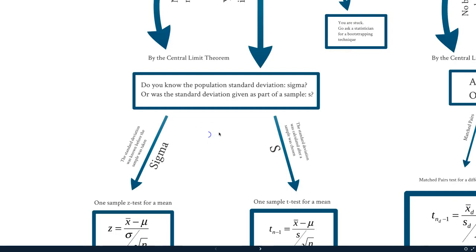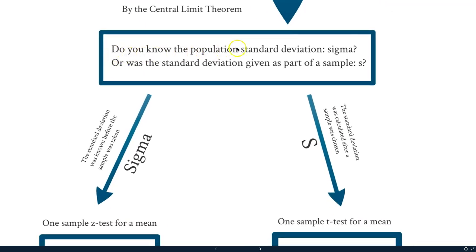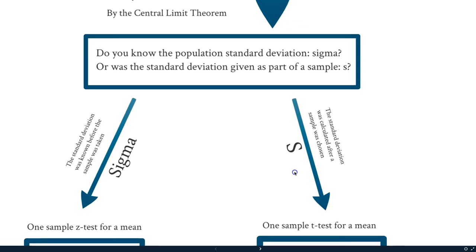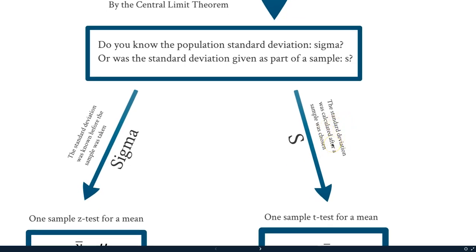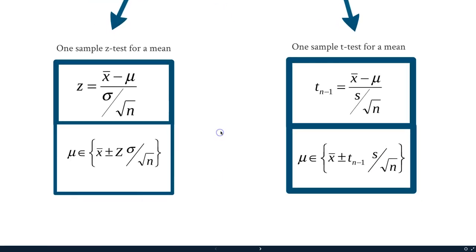This next step is our next question. We've asked ourselves this question already when we were working on our confidence intervals. The question is: do you know the population standard deviation, that's sigma, or was the standard deviation given as part of the sample, that's s? If the standard deviation was given before the sample was taken, that's our sigma, like if it was gotten from previous research or a big paper. On the flip side, if the standard deviation was calculated from the sample that was chosen, either I give you the raw data and you have to calculate out the standard deviation, or if the problem just gives you the summary data, then we're dealing with s.